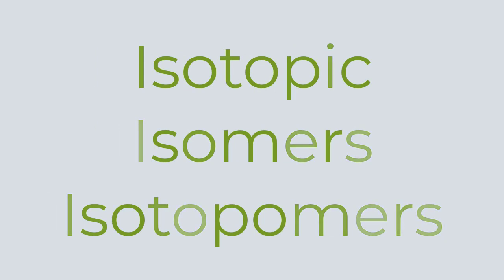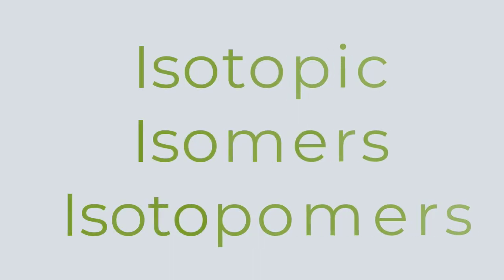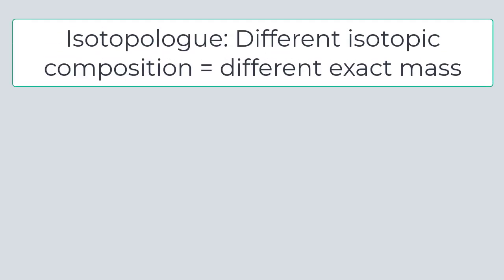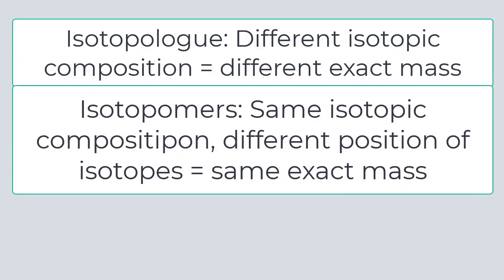Isotopic isomers, or isotopomers, are similar to isotopologues in that their connectivity is the same and their differences have to do with isotopes. Isotopomers are different from isotopologues in that while two isotopologues have different isotopic compositions, and therefore different exact masses, isotopomers have the same isotopic composition but the isotope is in a different place.